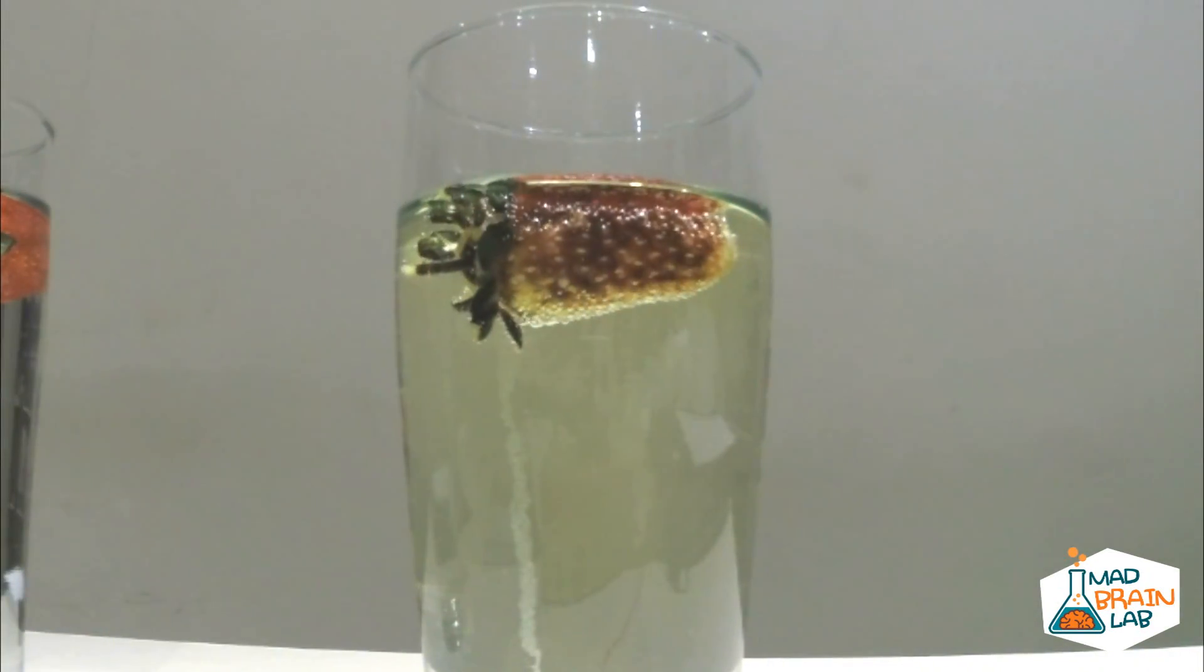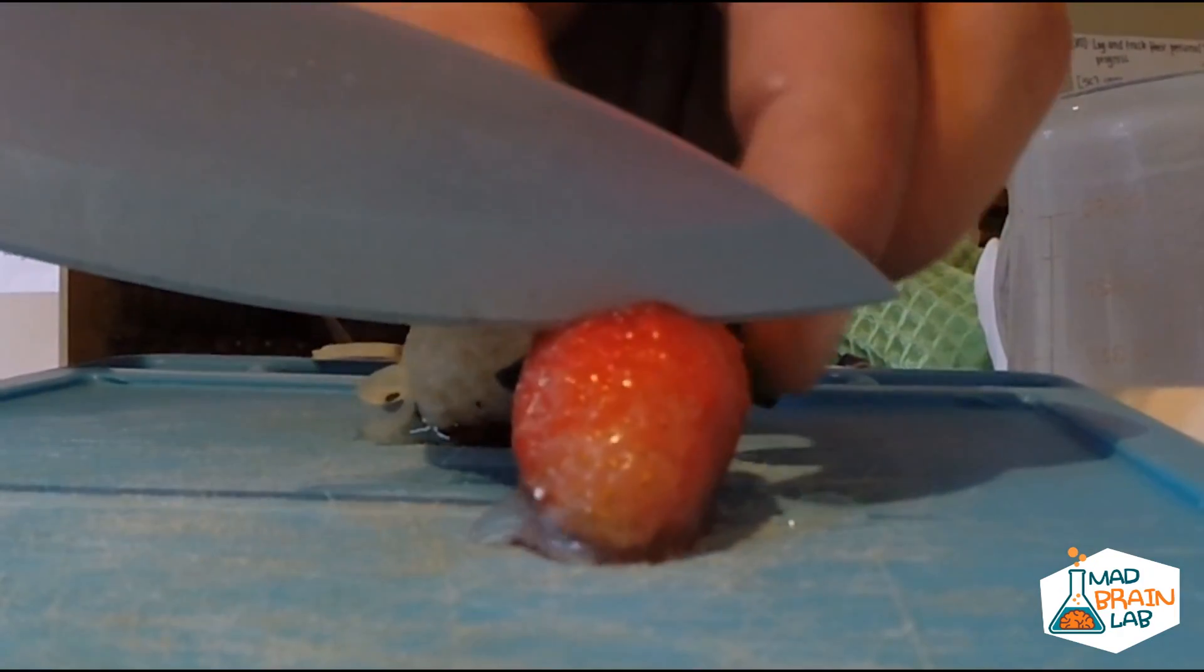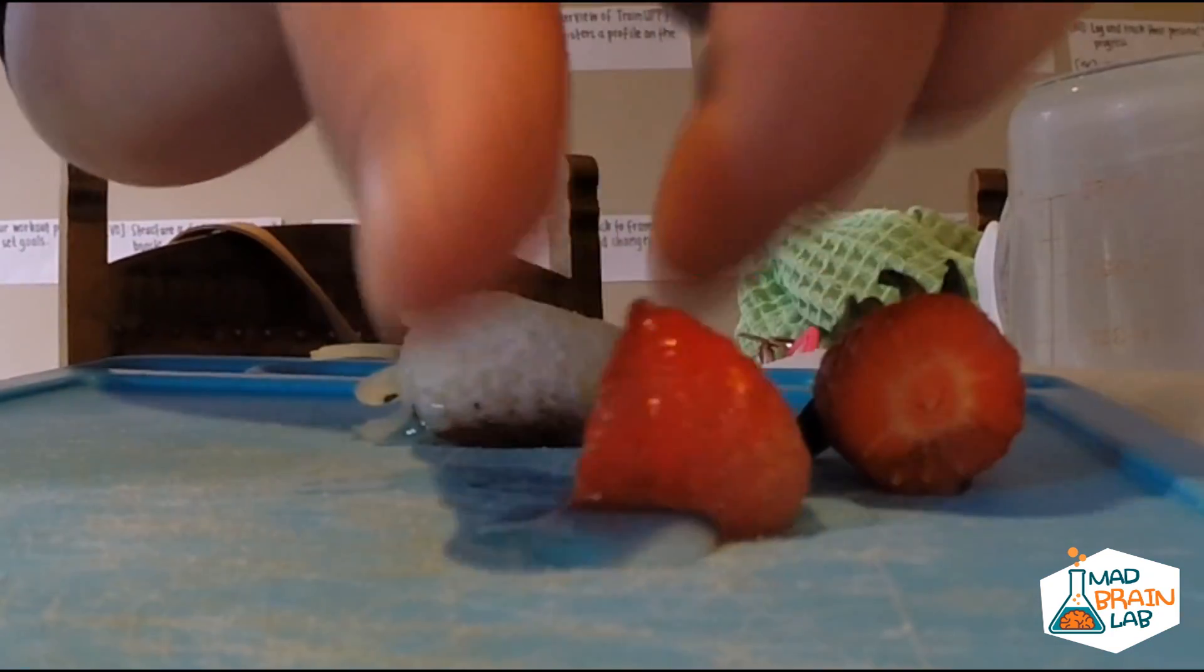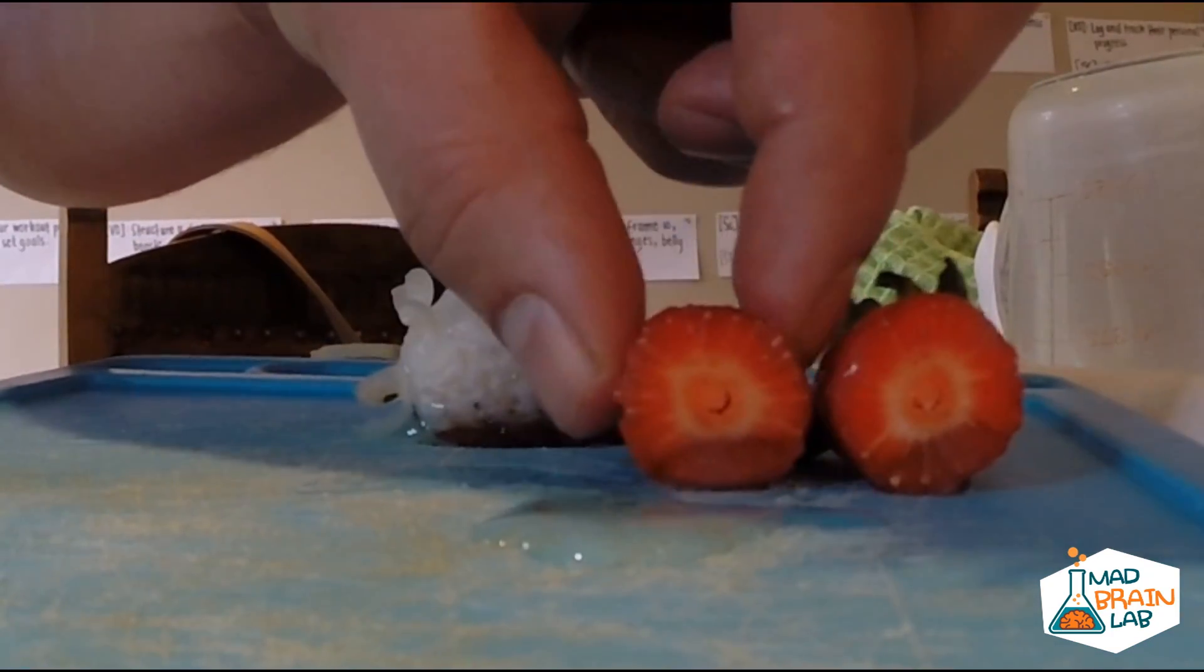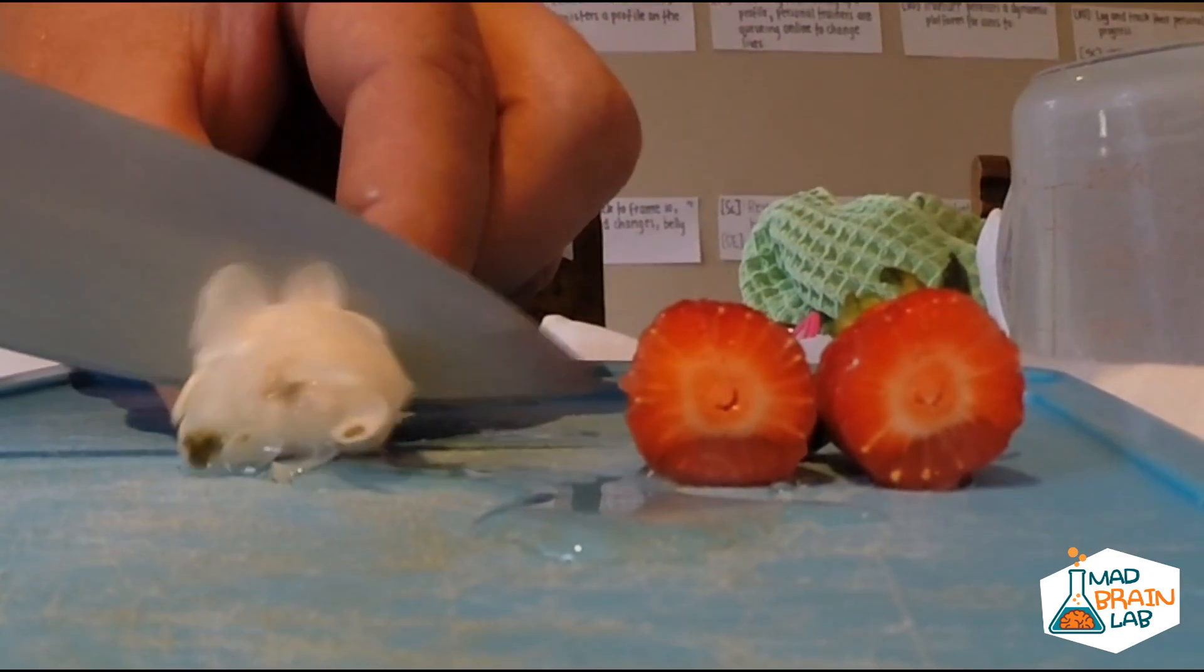We can see how chlorine oxidizes molecules responsible for color absorption within the strawberry. It also damages cell membranes and is highly destructive to cells in the strawberry. The control strawberry looks the same as before. When we cut the strawberries, we can see that the chlorine has infiltrated almost the entire strawberry within 10 hours.